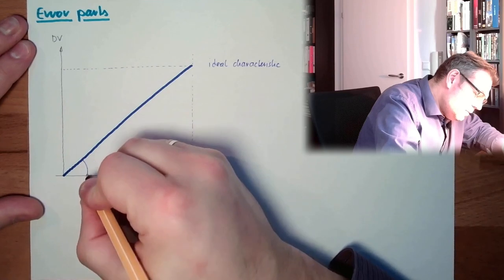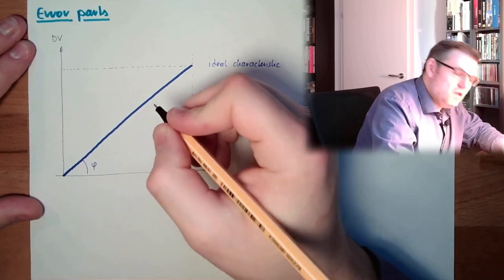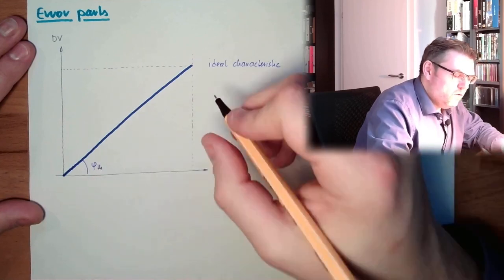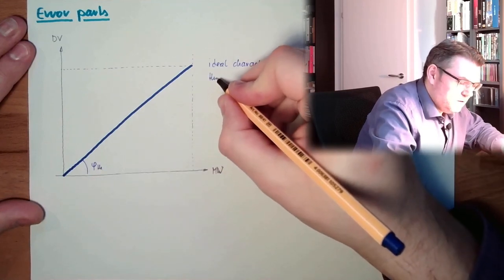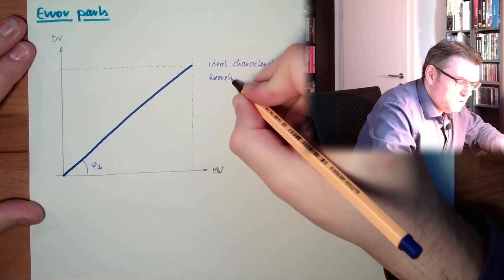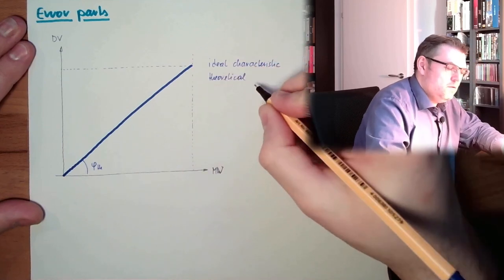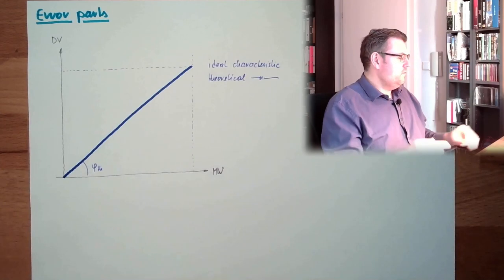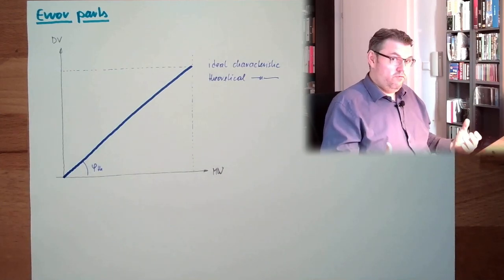Here we have some steepness, some slope. Or let's call it theoretical characteristic. And in reality, it does look different.